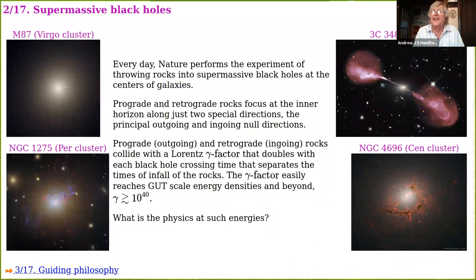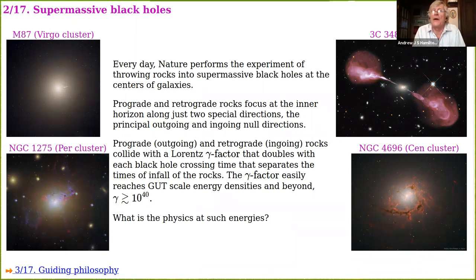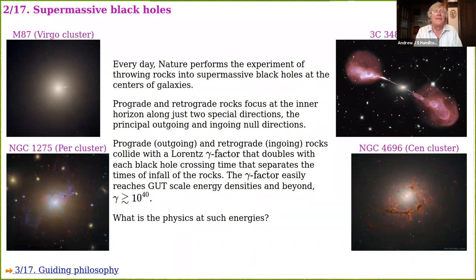Poisson and Israel imagined that the energy driving this exponentially growing instability arose from gravitational waves generated at the time of collapse of the black hole. But real black holes today are filled not with gravitational waves — the energy inside them comes from accretion. This is especially true for supermassive black holes at the centers of galaxies, which gain most of their masses — ranging from several million to several billion solar masses — from accretion.